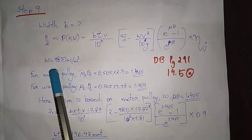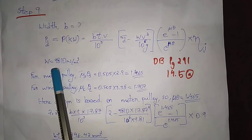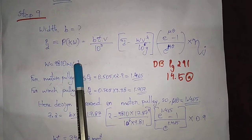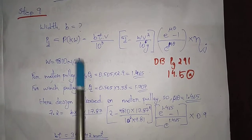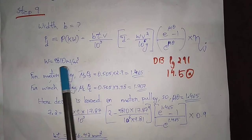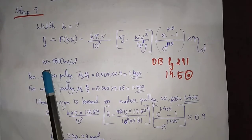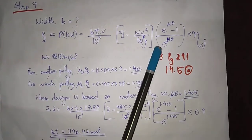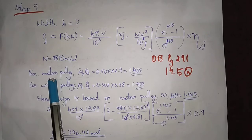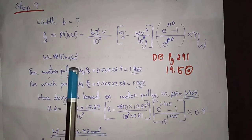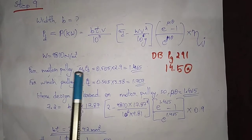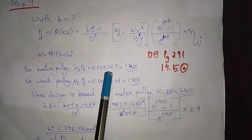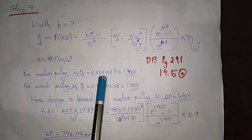Here, w is the weight density. We take w = 9810 N/m³ — this is a fixed standard value. This is mu×theta. So for the motor pulley, mu_s into theta_s — we will take the coefficient of friction.